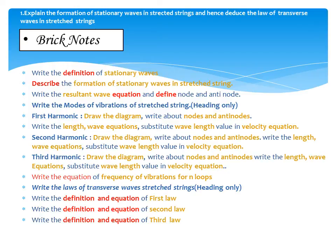Once again: write the definition of stationary waves, describe the formation of stationary waves in stretched strings, write the resultant wave equation and define nodes and antinodes. Write the modes of vibration of strings — this is heading only. First harmonic: draw the diagram, how many nodes and antinodes, write the length and wavelength equations, and substitute wavelength value in velocity equation. Now we find the frequency of first harmonic.